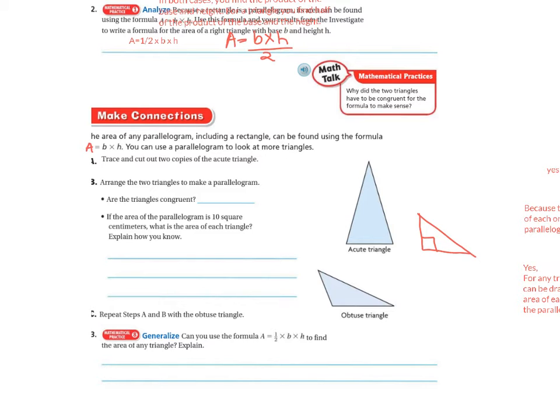So are the triangles congruent? And the answer is yes. So any time I take a square and I cut it in half, I am going to have two congruent triangles. Okay, so the answer is yes.